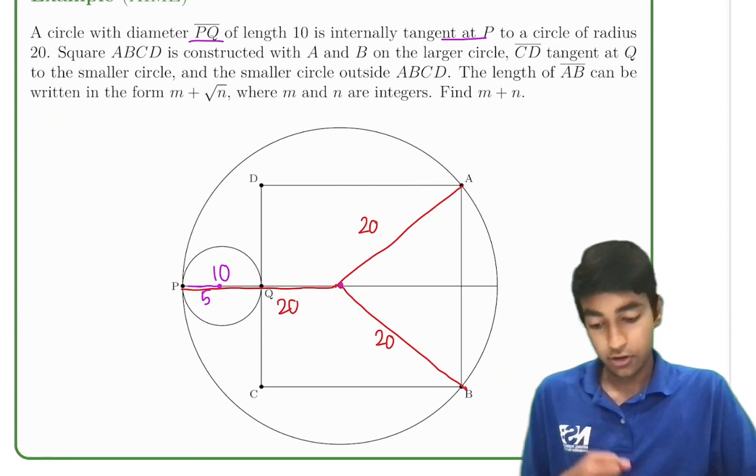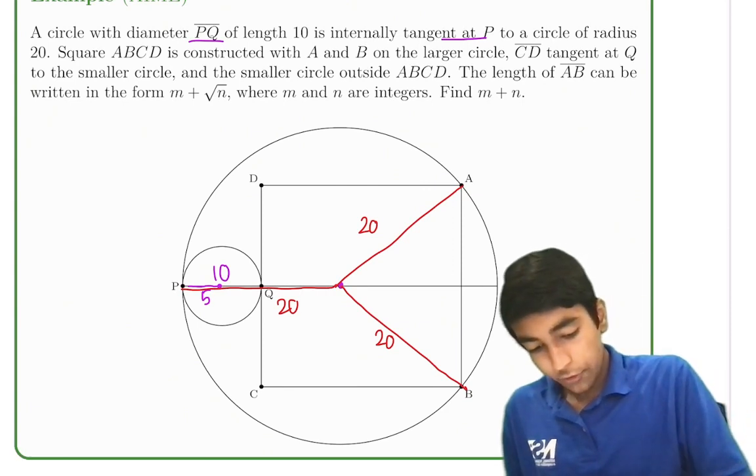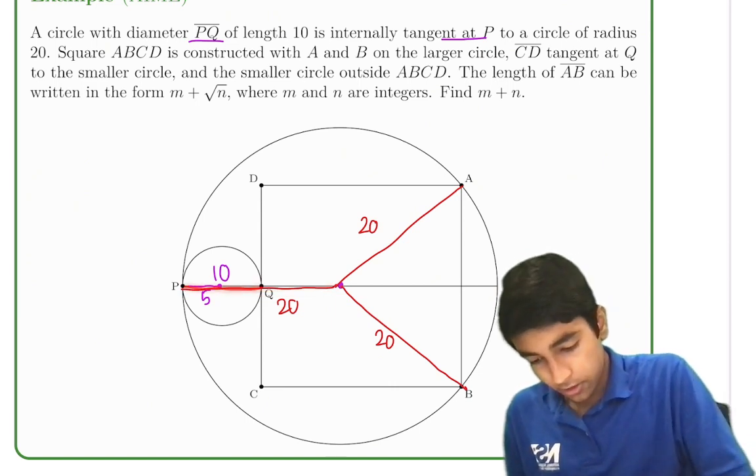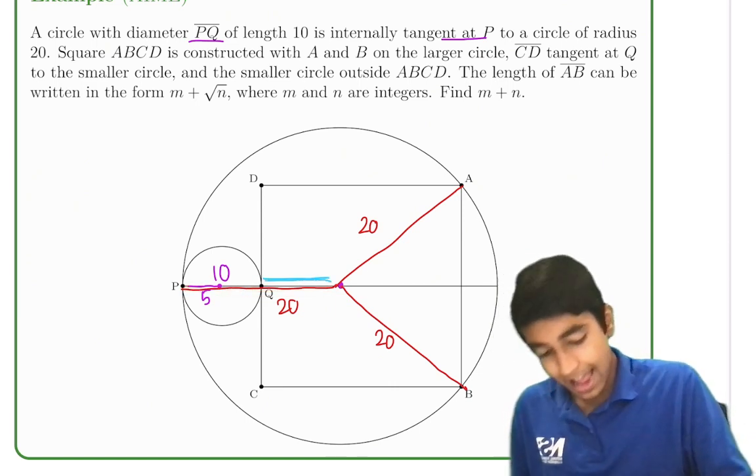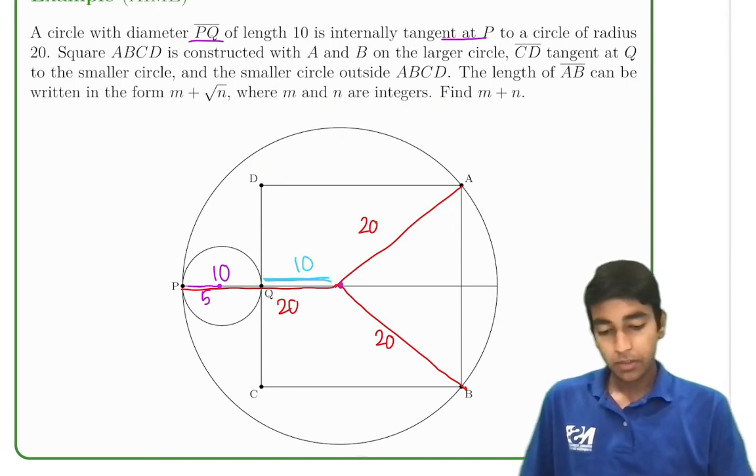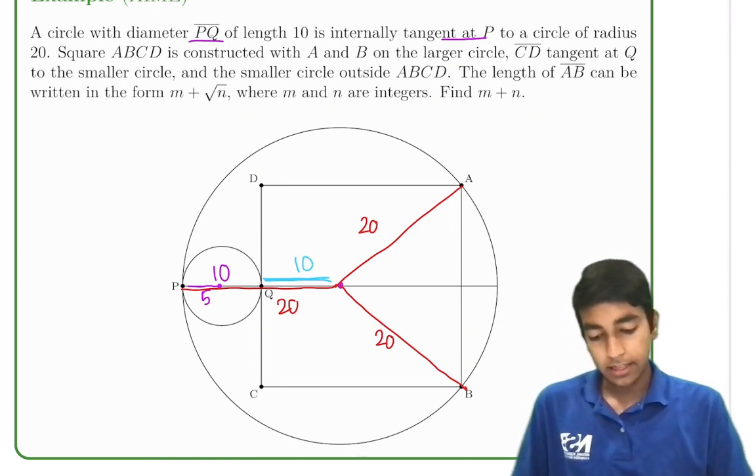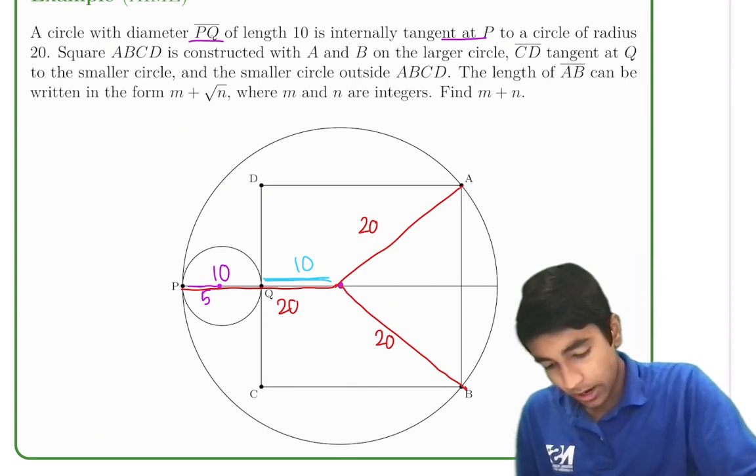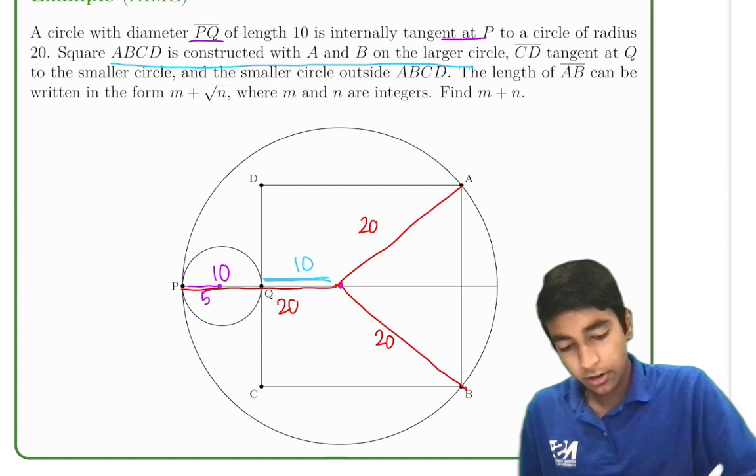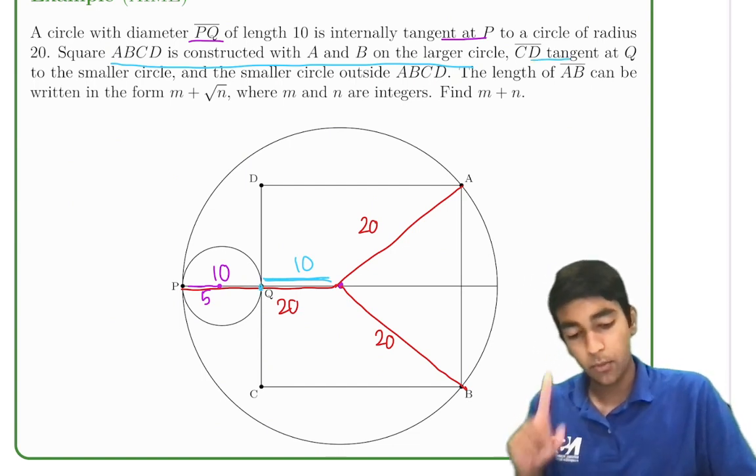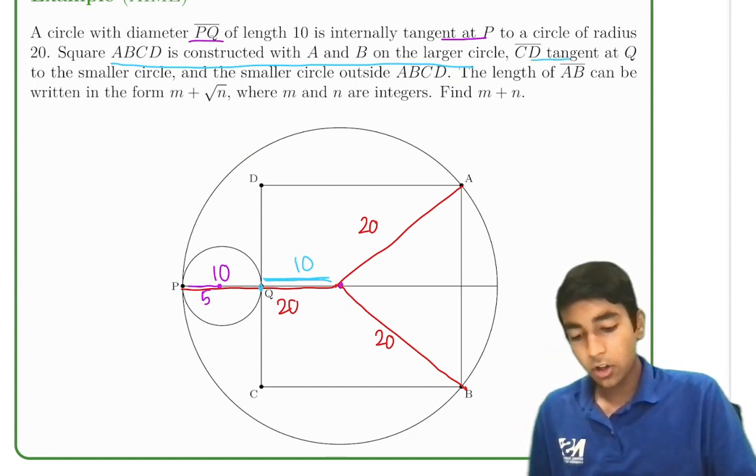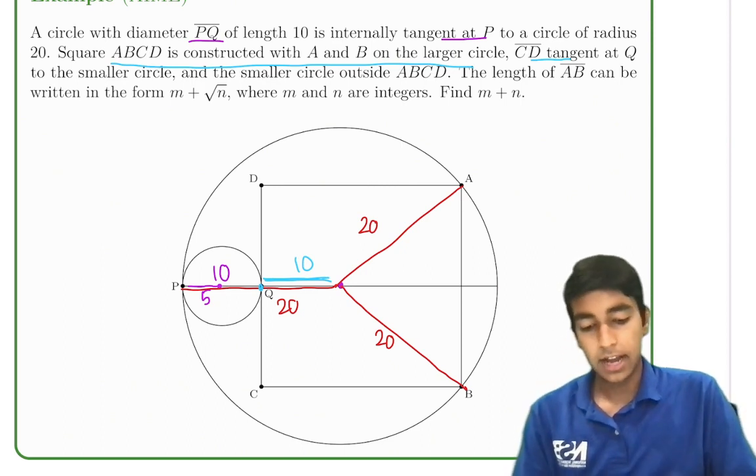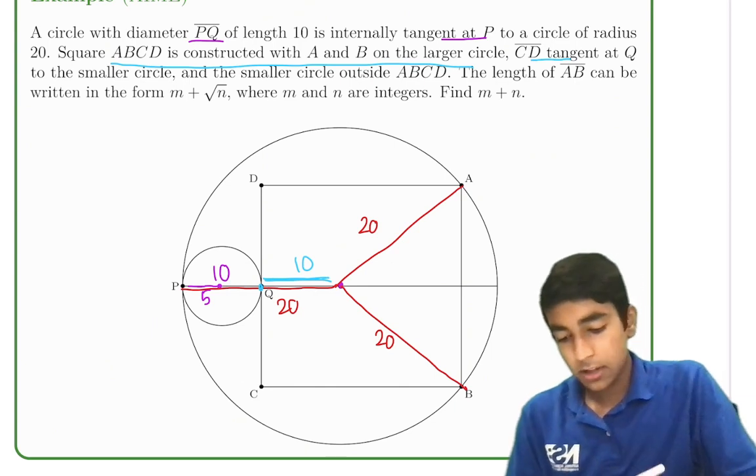That's a good strategy to use in geometry problems. So if we know that this length is 20, and the diameter of the circle is 10, we know that this top part over here is 10. We're asked to find the length AB, which is also the side length of the square. We construct a square on the larger circle such that CD is tangent at Q, they're touching at one point, to the smaller circle and the smaller circle outside ABCD.